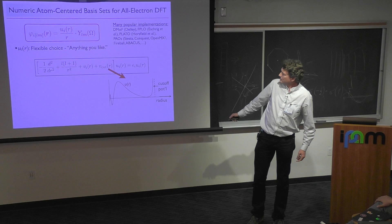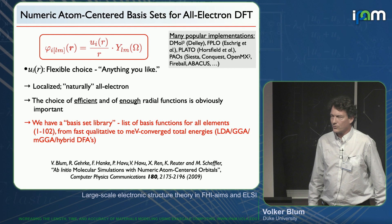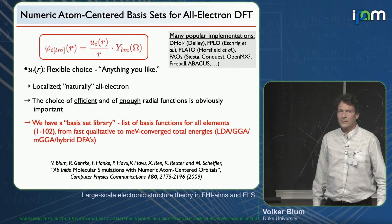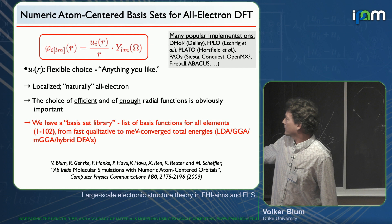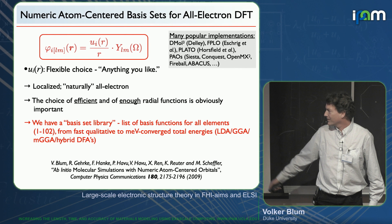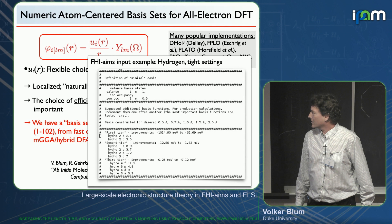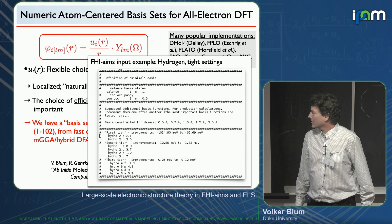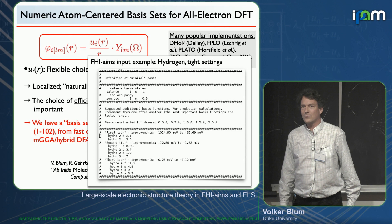I spent a year or two creating a basis set library — a tabulated list of basis functions for all elements up to element 102, described in a published paper. These can be small or large basis sets, allowing you to tune calculation accuracy as needed. In practice this is quite simple: there's an input file to the code which you paste in — for instance, tight settings for hydrogen. You can comment in or out pre-tabulated basis functions, or build your own.